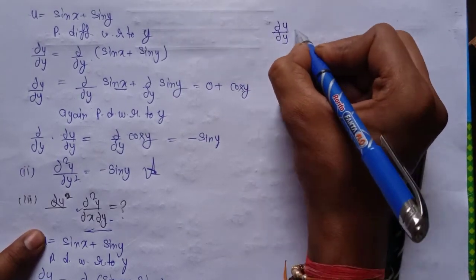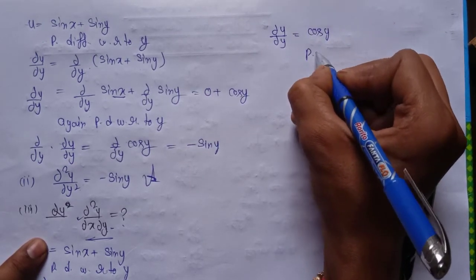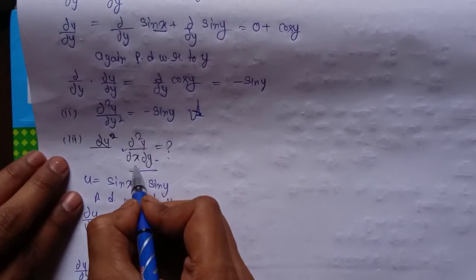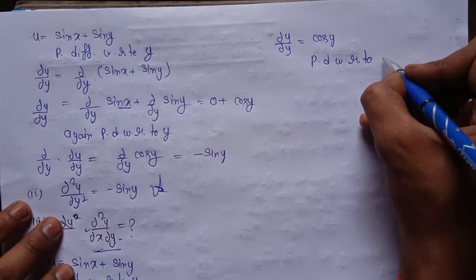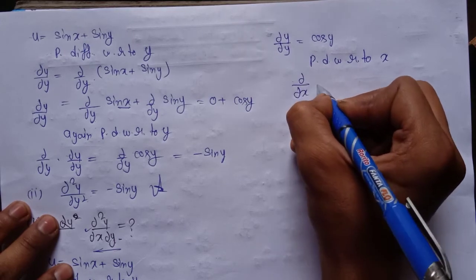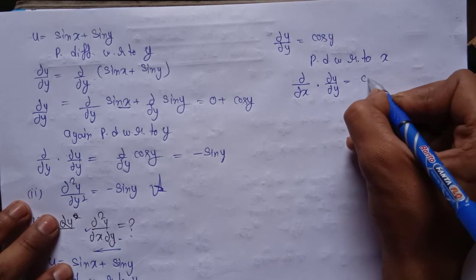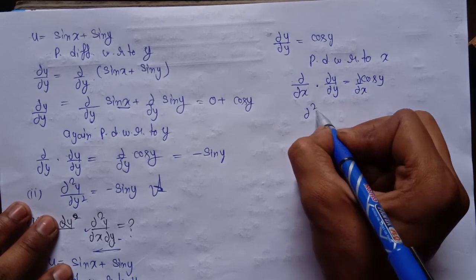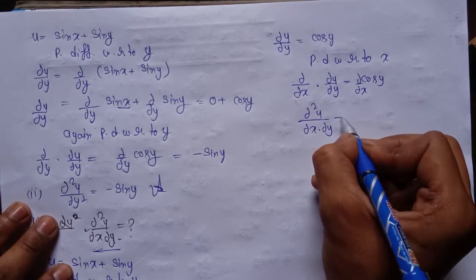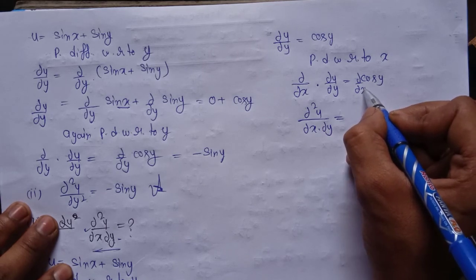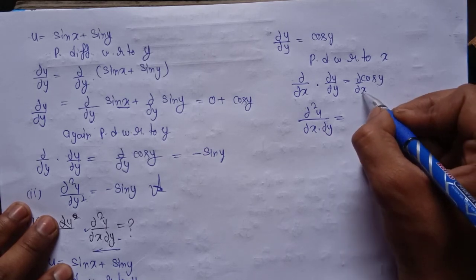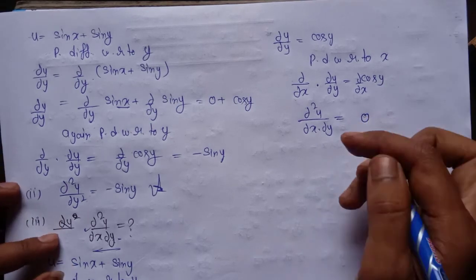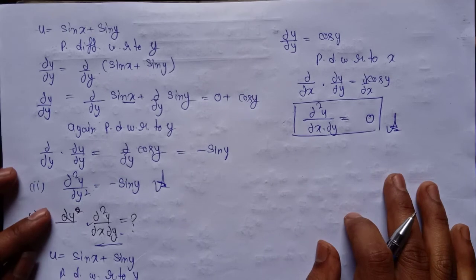So: ∂/∂x of (∂u/∂y) = ∂/∂x of cos y. Now cos y has no x in it — it is constant with respect to x. So its derivative is 0. Therefore ∂²u/∂x∂y = 0. That is our third answer.